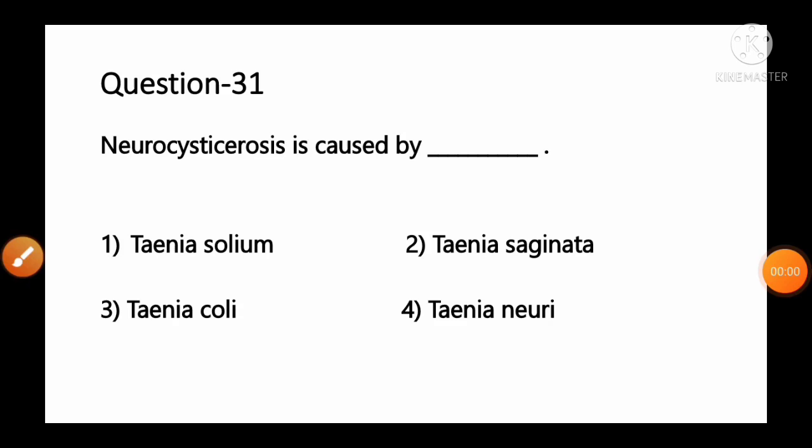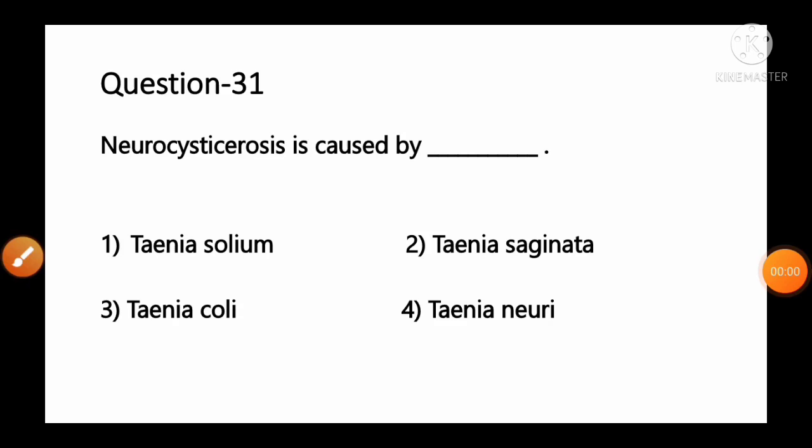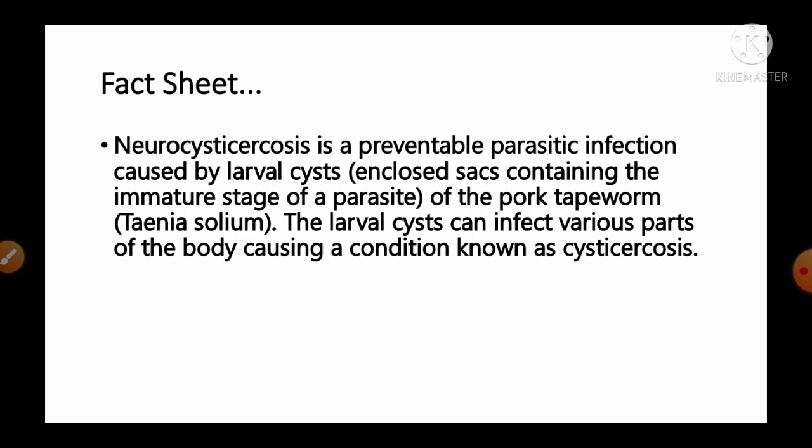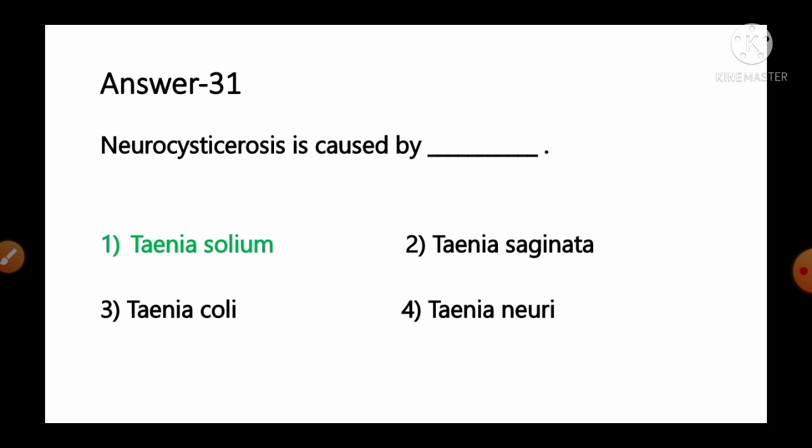Question number 31: Neurocysticercosis is caused by — options: 1) Taenia solium, 2) Taenia saginata, 3) Taenia coli, 4) Taenia neuri. Neurocysticercosis is a preventable parasitic infection caused by larval cysts of the pork tapeworm known as Taenia solium. The larval cysts can infect various parts of the body causing cysticercosis. So option number 1, Taenia solium, is the correct answer.